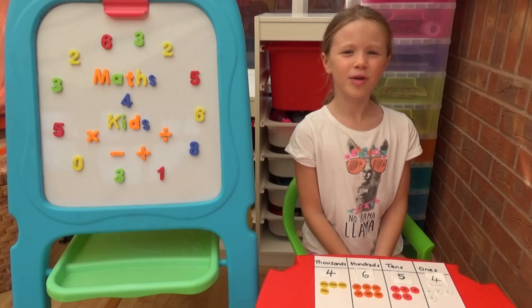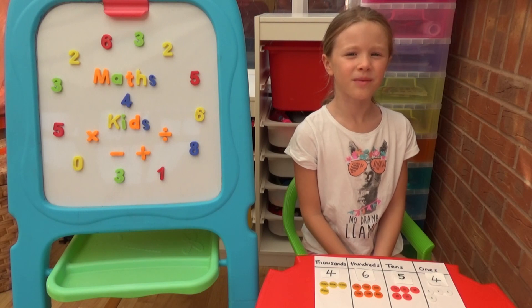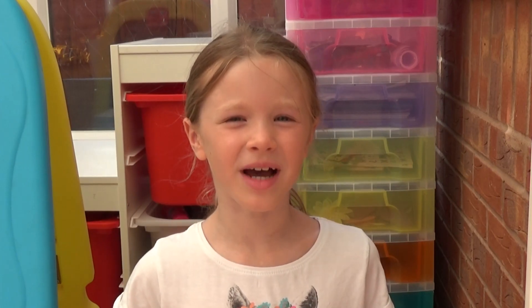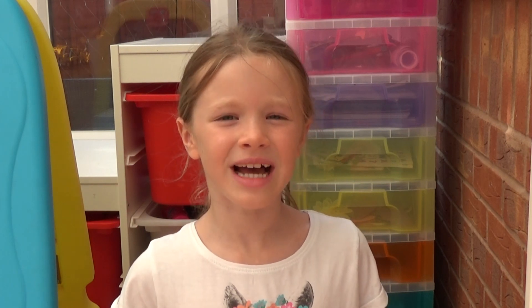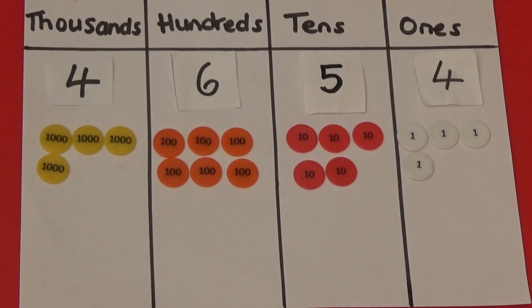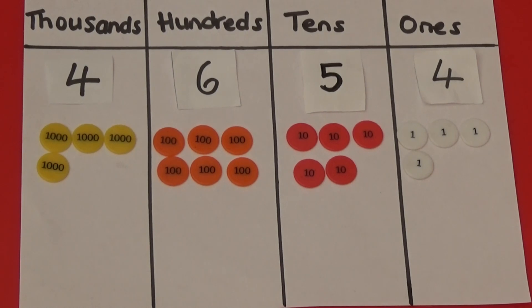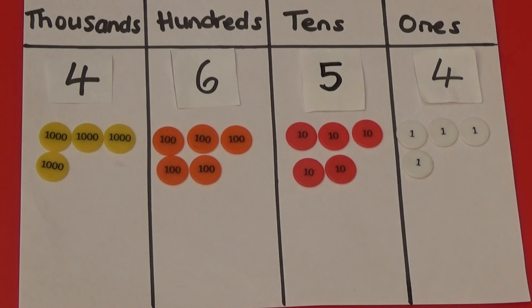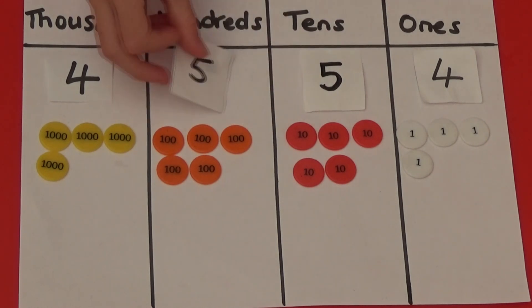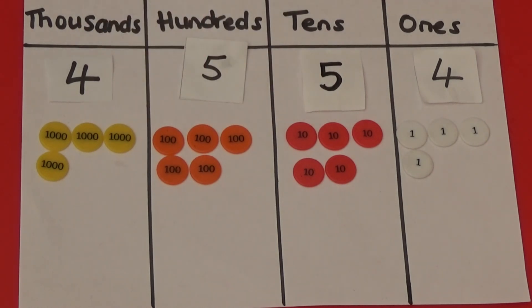First, I'm going to look at subtracting 100 from this number. To subtract 100, I only need to look at the 100s column as the 1000s, 10s and 1s won't change. To subtract 100, I need to take a 100 counter away. So my number now is 4554.